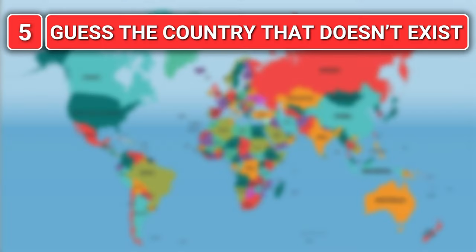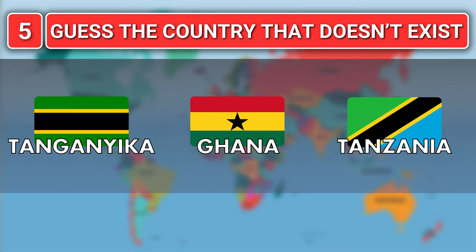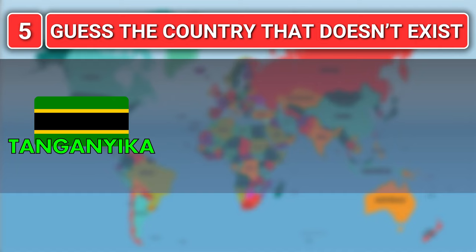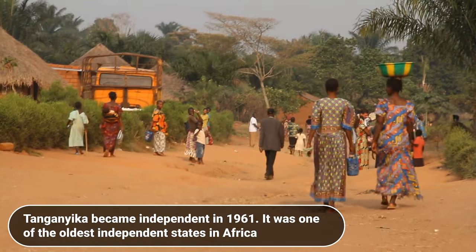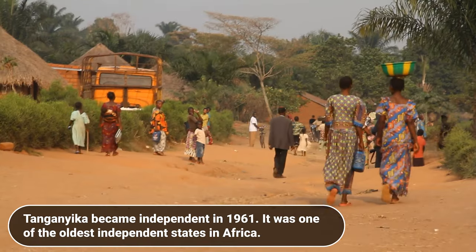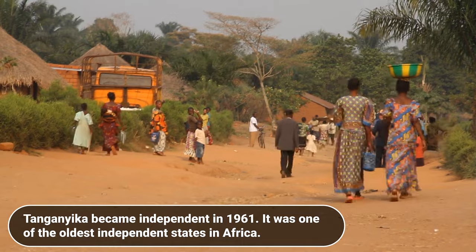Which of these no longer exists? Tanganyika, Ghana or Tanzania? It is Tanganyika. Tanganyika became independent in 1961 and was one of the oldest independent states in Africa.